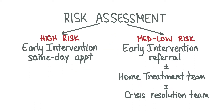Patients presenting with symptoms of psychosis should be assessed urgently, ideally on the same day, to determine their level of risk. Patients seen to be at high risk to themselves and/or others should be seen on the same day by the early intervention in psychosis team. Patients who are not deemed high risk should still be referred to the early intervention psychosis team, and if they cannot be seen urgently, they should be referred to the crisis resolution and home treatment team in the interim.